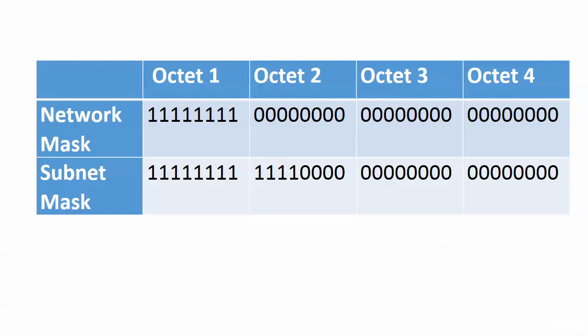In the subnet mask we have a slash 12. We know that begins with 12 ones, so that's what I've written out here. Our subnet bits are where the network mask has a zero and the subnet mask has a one. So how many do we have? We got four, right? Because in octet 2, the first four bits are set to zero in the network mask and the first four bits are set to one in the subnet mask.